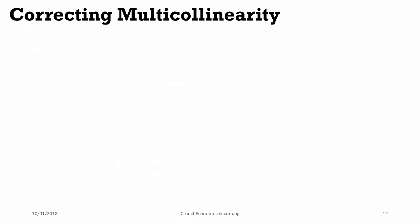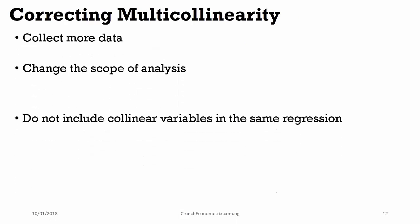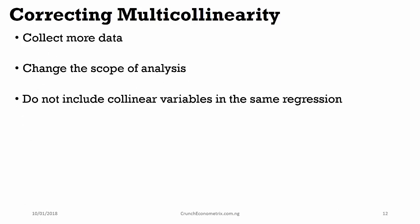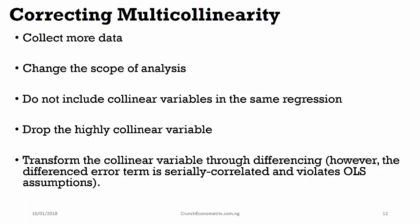How can it be corrected? You can collect more data. You can change your scope of analysis. You don't have to include highly collinear variables in the same model. If you have to drop the highly collinear variable, it is advisable. You can also transform the collinear variable through differencing.